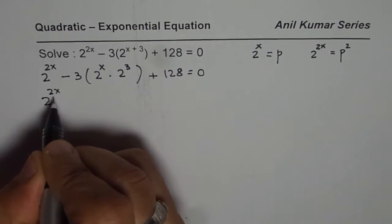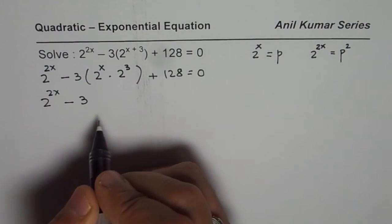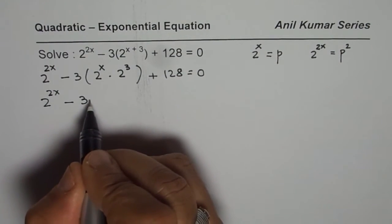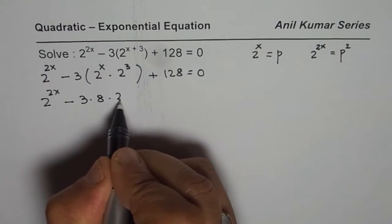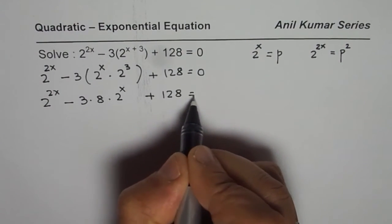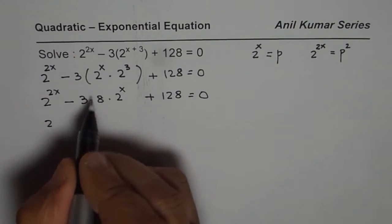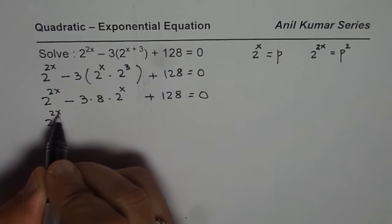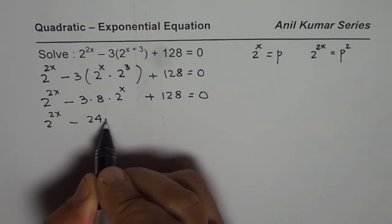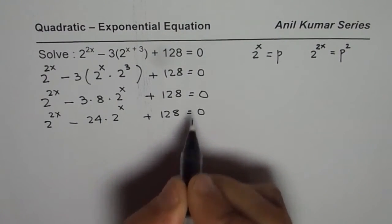So we have 2 to the power of 2x minus 3. Now 2 to the power of 3 is 8. So we can write this as times 8 times 2 to the power of x plus 128 equals to 0. I hope till now it is absolutely clear. These are very critical steps to understand. Let me combine them and write them as 2 to the power of 2x minus 24 times 2 to the power of x plus 128 equals to 0.